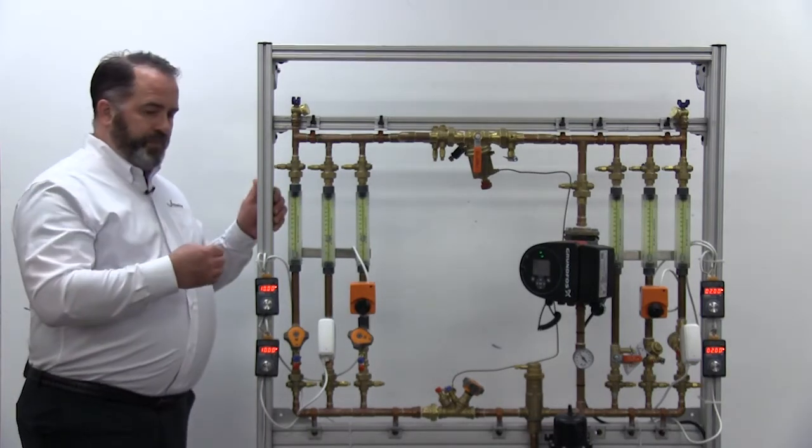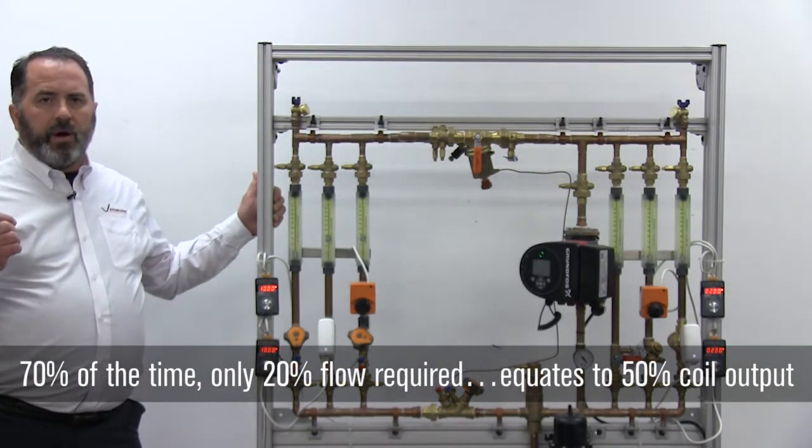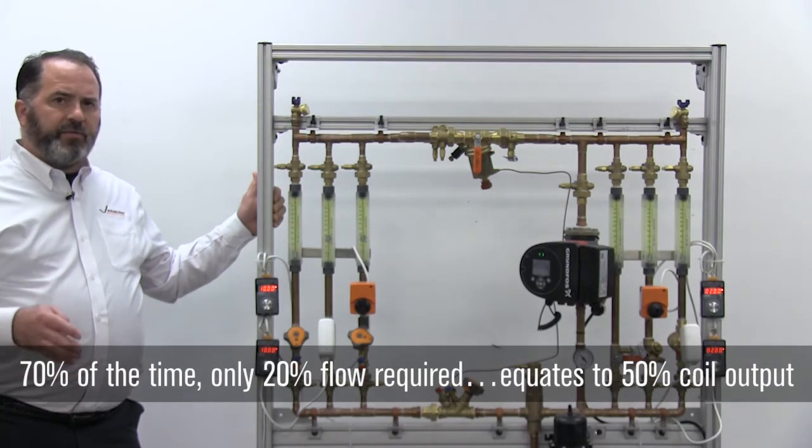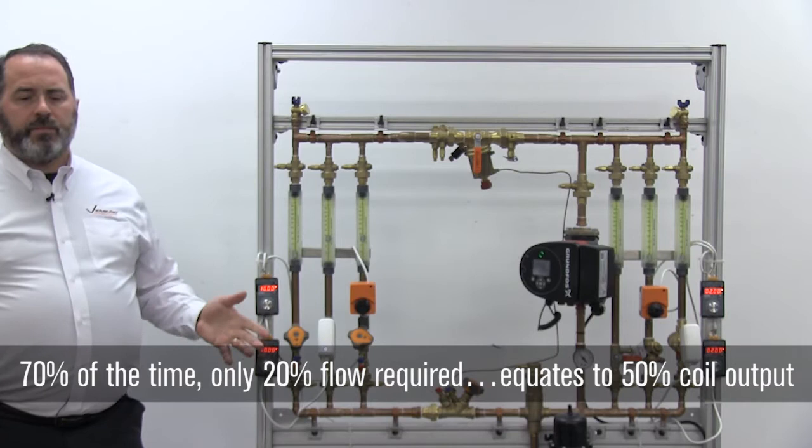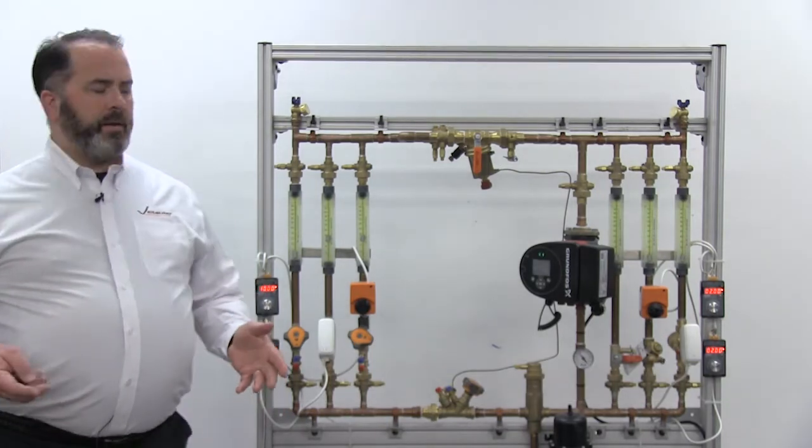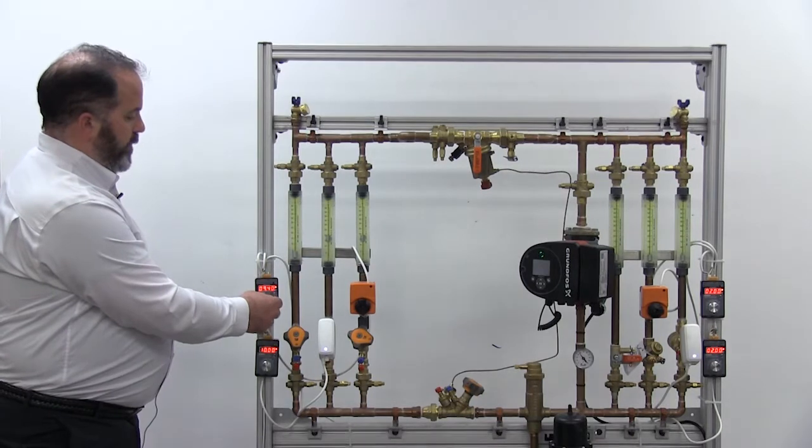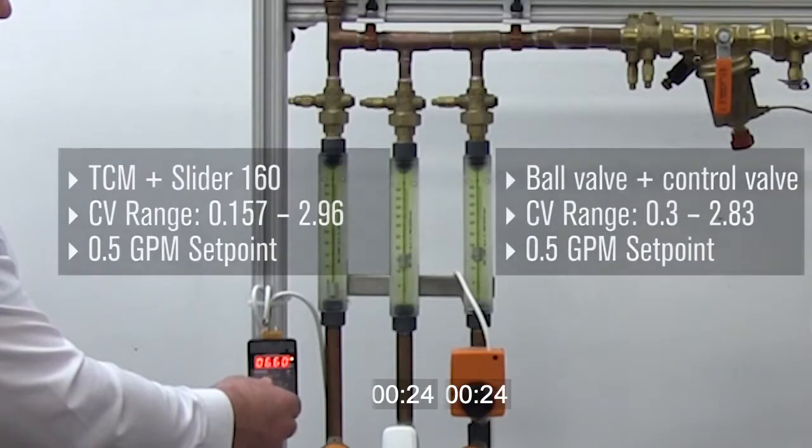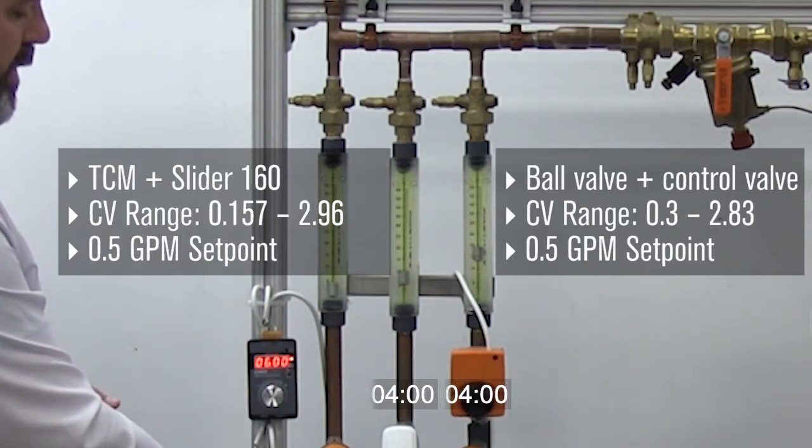Let's go back to our 70% of the time you're only requiring 20% of the flow through the valve, because 20% of the flow through the valve translates to 50% of your coil output, which is where most systems typically operate. So in order to do that, it's a characterized control valve, so we want to take it to 50% of the signal. In this case it's 2 through 10 volts, so it's 6 volts. Take both of those to 6 volts and we'll allow them to operate.